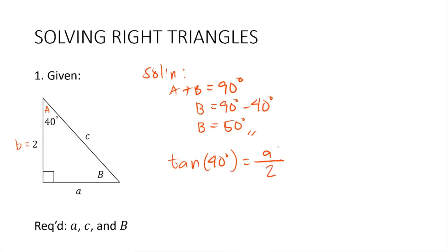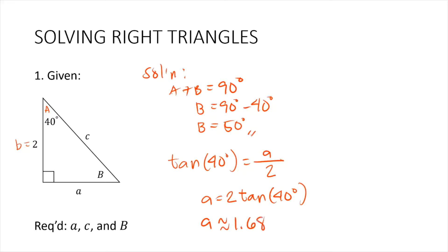Plugging in, A equals 2 times tangent of 40 degrees. Since 40 degrees is not a special angle, we use a calculator. So A is approximately 2 times tangent 40, which results to 1.6782, say 1.68 units.